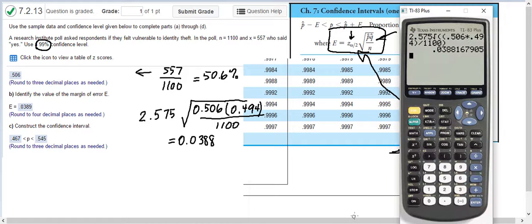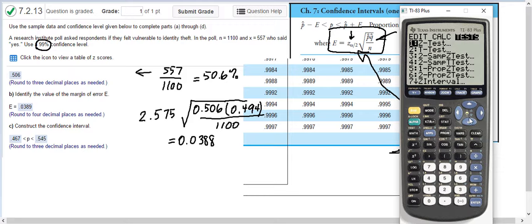And from that, you can find the error. So let's do stat. And we're going to go down and we're going to do test. And we're going to scroll all the way down. This is a one proportion z interval. Notice the first ones on the list are all tests. Those are things we're going to do in the later chapters. For now, we're doing intervals. Confidence intervals. We need these ones that say intervals. And this is a one proportion z interval.